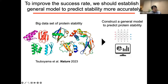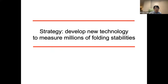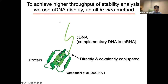The long-term goal of my project is to construct a general model for predicting folding stability of proteins more accurately. To this end, we need to collect a huge dataset on protein folding stability for training and testing of the prediction model. Our question is: how can we get such an enormous amount of protein stability data? So we developed a new method to quantify the folding stability of proteins in a very high-throughput manner. To achieve this, we utilize the cDNA display method, which is an all-in-vitro method. In this method, we can conjugate protein with its corresponding cDNA to mRNA.